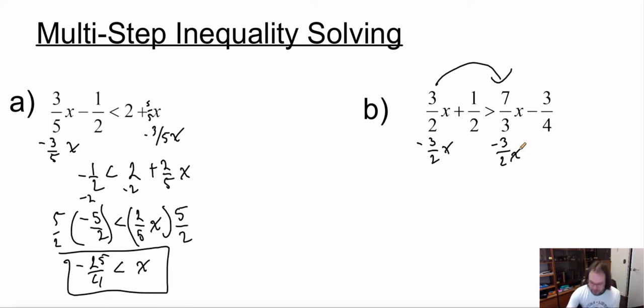Now just a quick little math here, we have 7 over 3, subtract 3 over 2. That's the same thing as 14 over 6, subtract 9 over 6, which is going to give me 5 over 6. So we have 1 over 2 is greater than 5 over 6x, and we're going to minus 3 over 4.